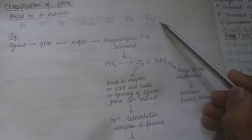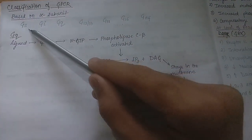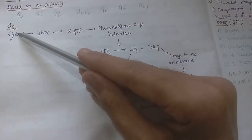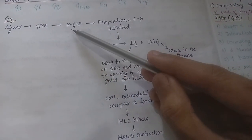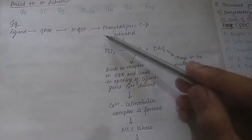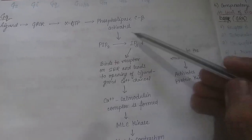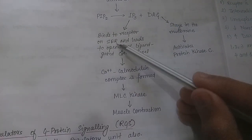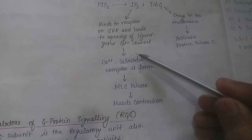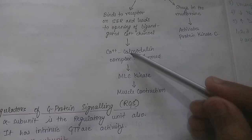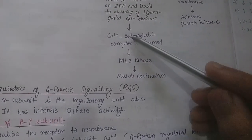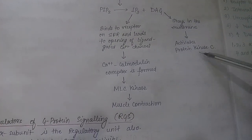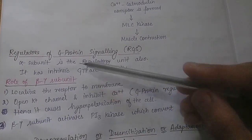GPCR is classified on the basis of the alpha subunit: GS, GI, GQ, G12/13, G11, G16, and G olfactory. The three most important are GS, GI, and GQ. For the GQ pathway: ligand binds to GPCR, leading to activation and dissociation of alpha from beta-gamma, activating phospholipase C-beta. This enzyme converts PIP2 into IP3 and DAG. IP3 binds to receptors on smooth endoplasmic reticulum, leading to calcium release, forming calcium-calmodulin complex, which activates myosin light chain kinase causing muscle contraction. DAG stays in the membrane and activates protein kinase C.